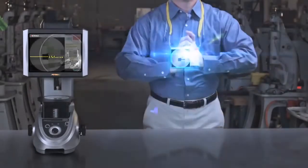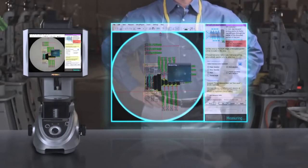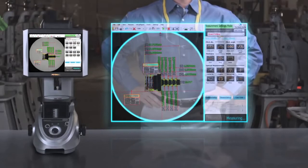Keyence makes what was an enormous task simple, fast, and precise. For starters, programming the IM series takes less time than it does to measure a single part by hand.